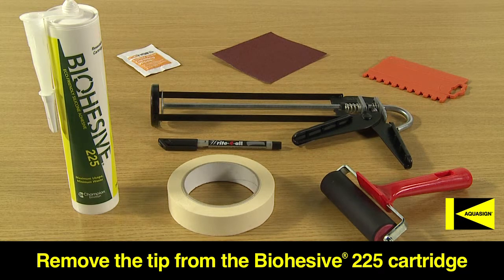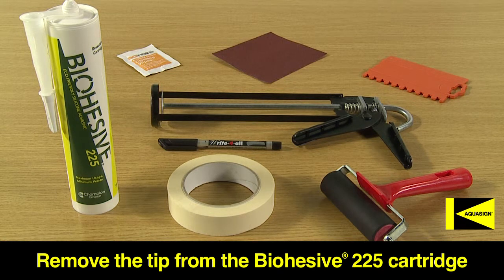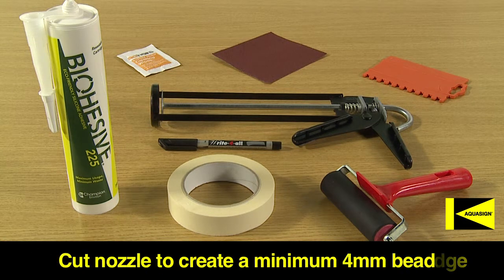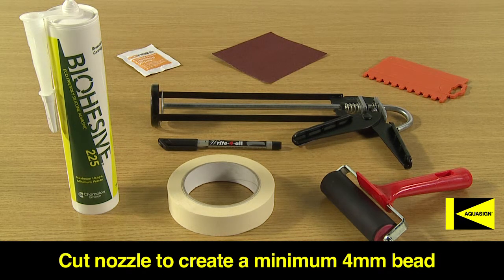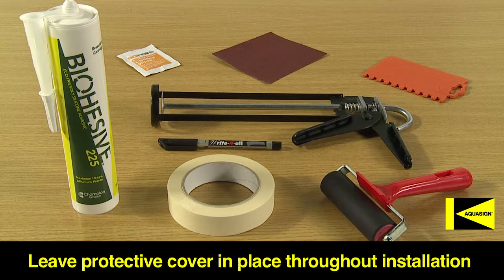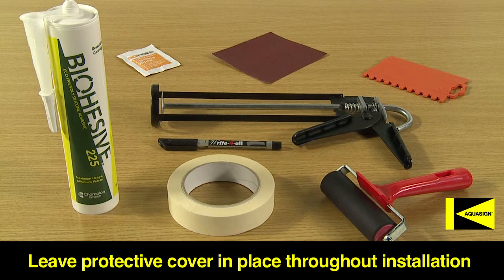Prior to production, it is recommended to remove the tip from the bio-adhesive 225 cartridge, cut nozzle to create a minimum 4mm bead, and leave the Aquasign marker's protective cover in place throughout the installation process.